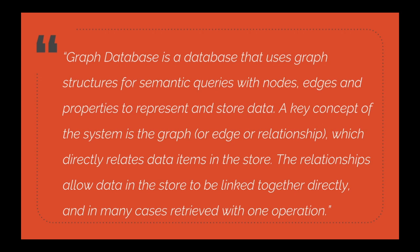A typical example of a graph database could be a social networking site. In Facebook, I have 100 friends and those 100 friends have their own friends, all linked together because of mutual friends. At a high level, these profiles can be stitched together via a relationship called 'friends'. Similarly, you can have different pages which we like and follow, creating a nested graph that identifies a person and their relationships within the social network.